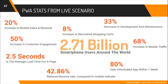Let's look at some PWA stats: 20 percent increase in mobile sales and revenue; 33 percent decrease in development cost because you only need to write the code once for both iOS and Android; 50 percent increase in customer engagement due to its remarkable and attractive features; 68 percent increase in mobile traffic; 42 percent reduction in bounce rate compared to other mobile sites; and an average page load speed of 2.5 seconds, which can be even less on subsequent loads.